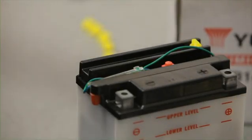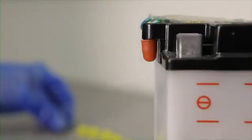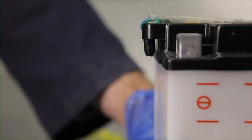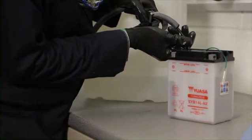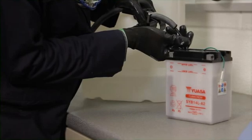Remove the sealing cap from the vent and throw it away. Never replace this after the battery has been filled with electrolyte, as it may cause the battery to rupture. Fill each cell with electrolyte to the fill level indicated on the battery case.